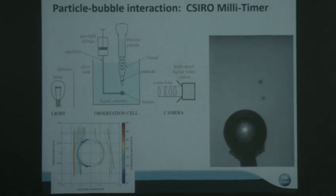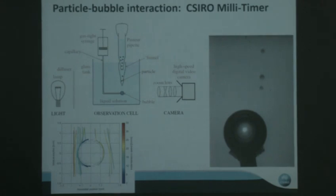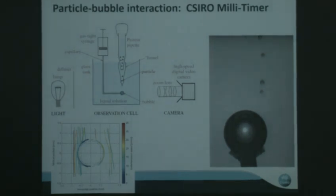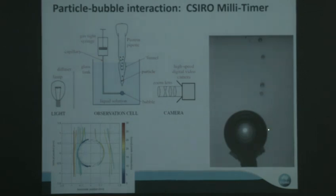Some of the work we've been doing on bubble-particle interaction involves a rig where we place a roughly one-millimetre bubble on the end of a tube, drop a number of particles down, and see how they interact. You can see the particles come down, some go in front of the bubble, some go behind, some slide around — and how far they slide around and the probability of whether they're going to touch the bubble is a fairly important thing to quantify.